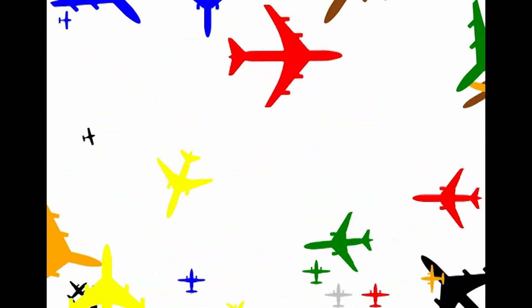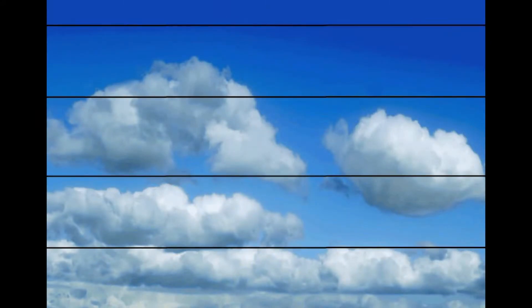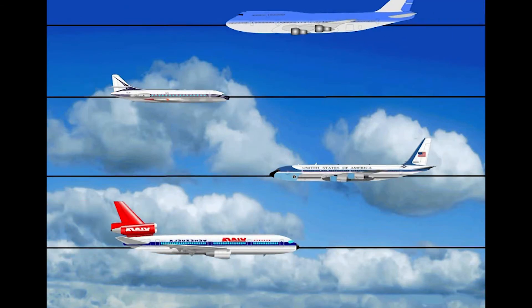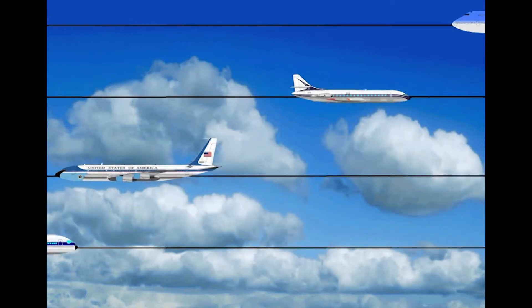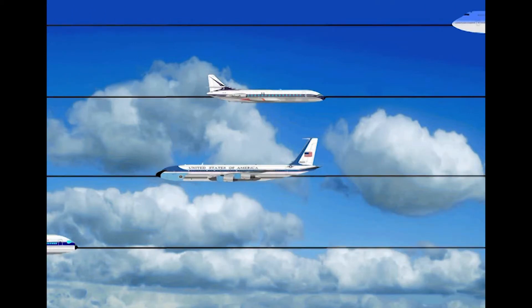We mentioned safe, orderly, and expeditious flow of traffic — but does this image look safe? Does it look orderly? Is this even expeditious? My answer is: potentially yes, it could be very safe, very orderly, and very expeditious — it just depends on perspective. If you look at these airplanes simply by looking out at the sky, it would appear safe, orderly, and expeditious.